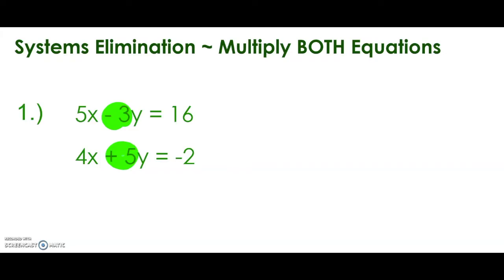So I'm going to make the negative 3 turn into negative 15 by multiplying this entire equation by 5. That will help us eliminate. And then the bottom equation, I want to make this positive 5 a positive 15, so I'm going to multiply the bottom equation by 3. So let's go ahead and do that. Remember, you do need to distribute this number to every term in the equation so that you can complete the elimination.